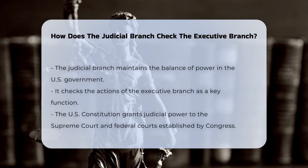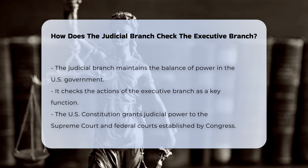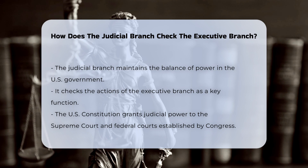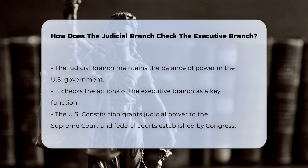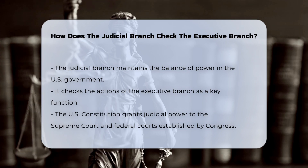The judicial branch plays a crucial role in ensuring the balance of power within the U.S. government, and one of its key functions is to check the actions of the executive branch. The U.S. Constitution vests the judicial power of the United States in the Supreme Court and other federal courts established by Congress. These courts have the authority to interpret laws and ensure they align with the Constitution.